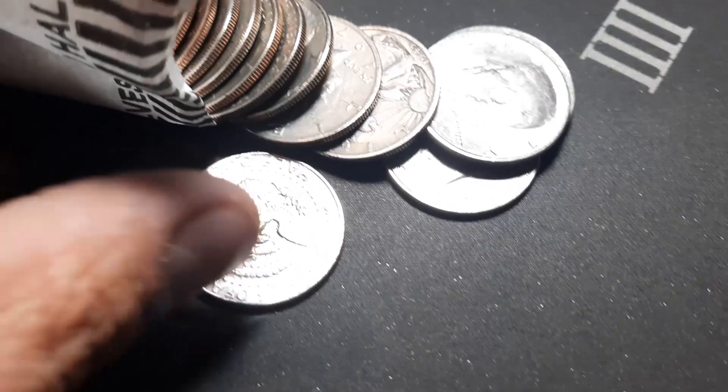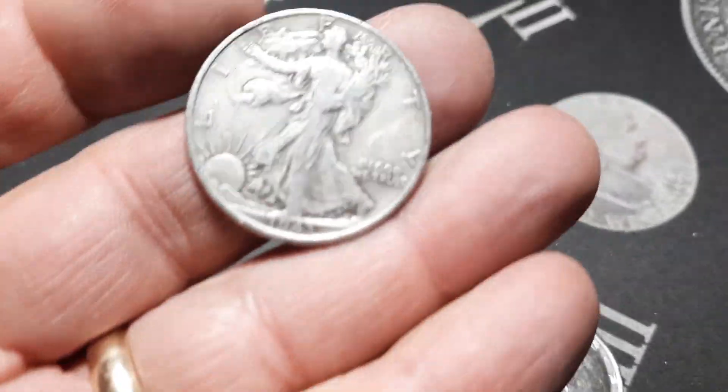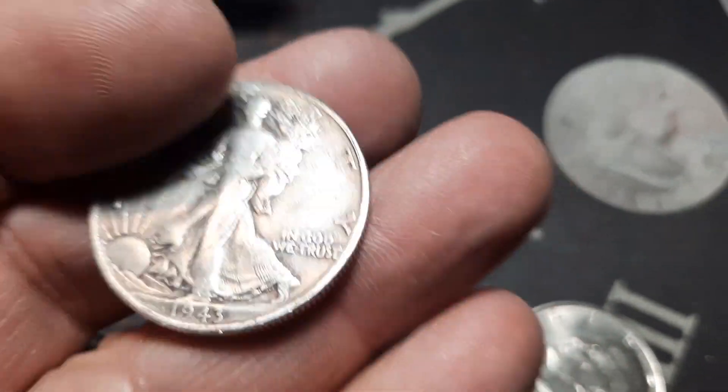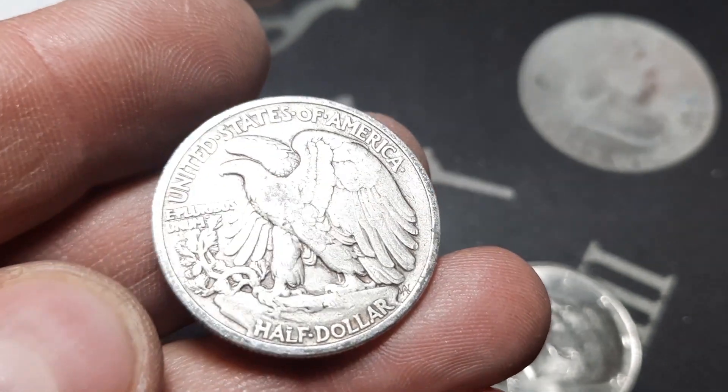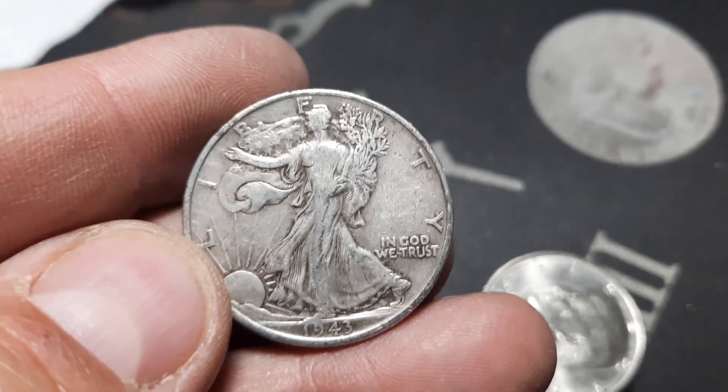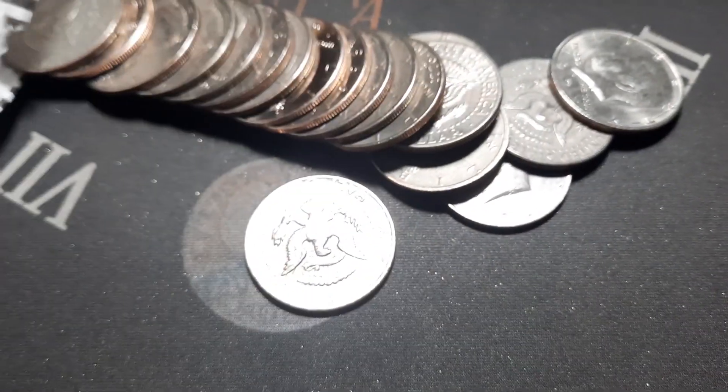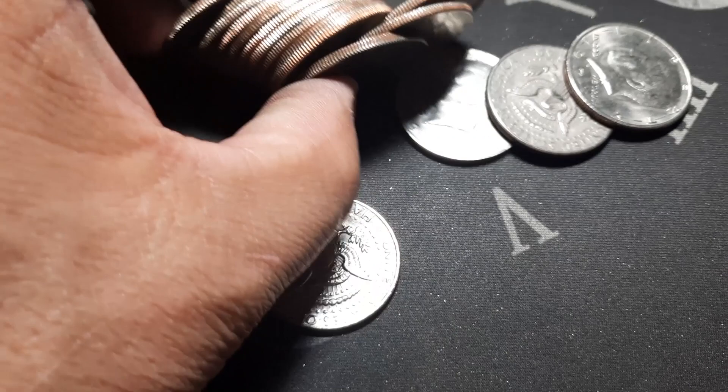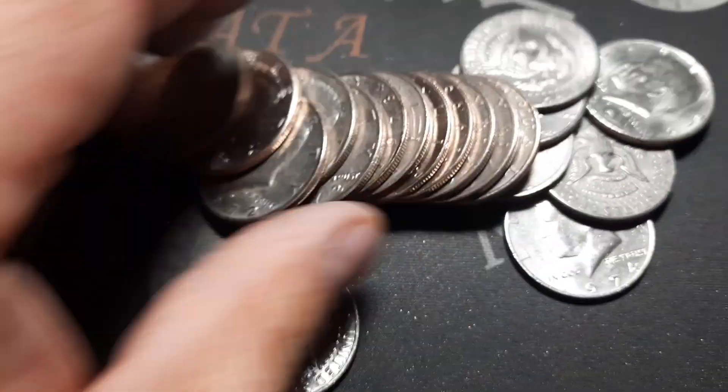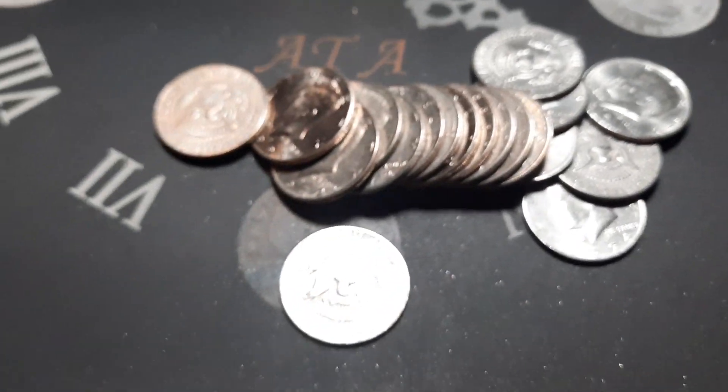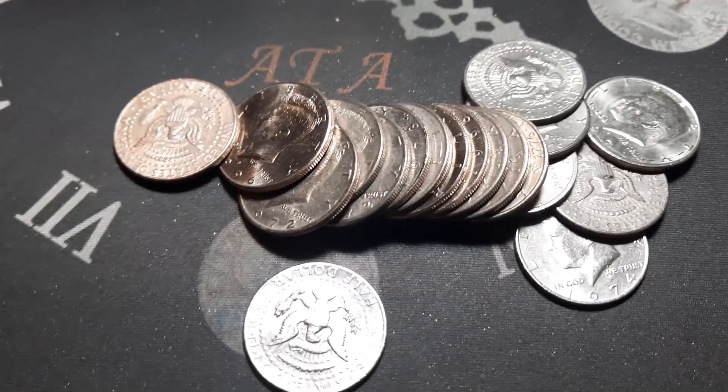And it's another walker. That is awesome. 1943 out of Philly. 90 percenter in the box. And I do not see anything else. All right, go through these last ones. Be back for a wrap up.